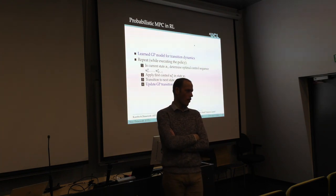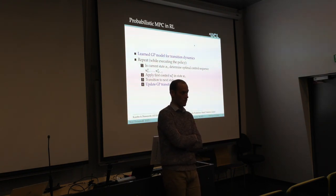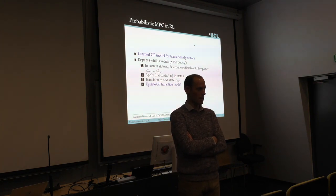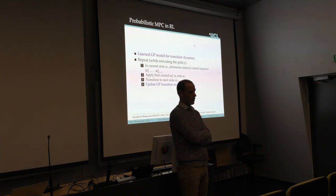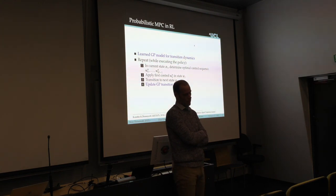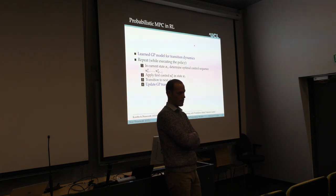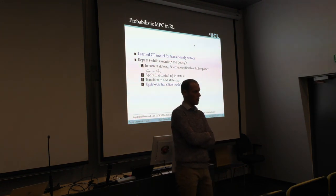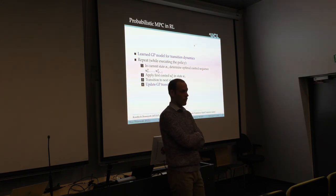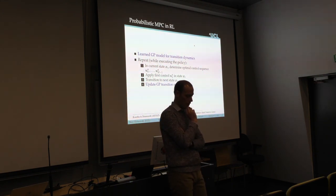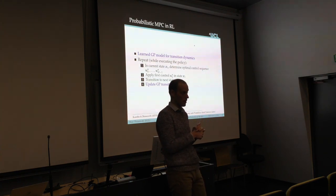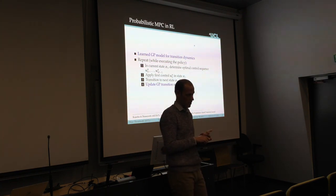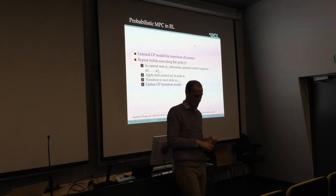Regarding placing a distribution on length-scale parameters: you could do this, but then all your closed-form computations go out the window. So we're happy with point estimates of the hyperparameters. They may be off in the early stages of learning, but after a few rollouts the hyperparameters are actually pretty good. The idea of placing a prior on those hyperparameters is the right idea — especially with very small data sets where the marginal likelihood is not particularly peaked — but it will cost you in terms of computation.